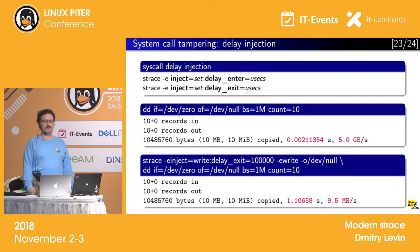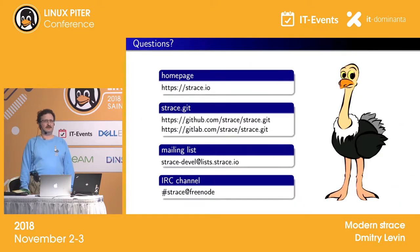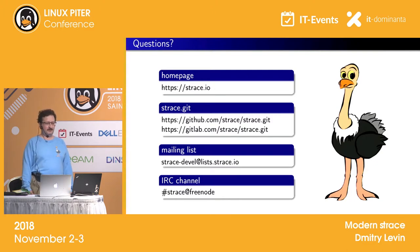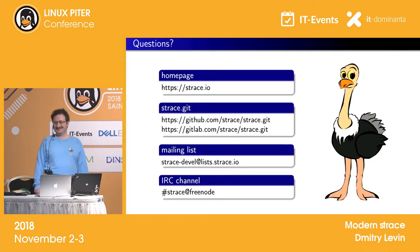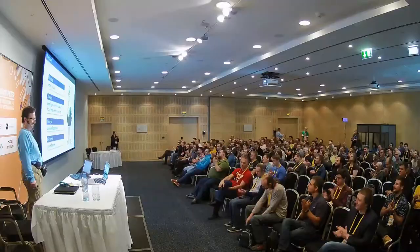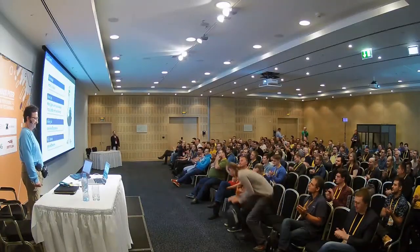That is what I wanted to talk to you about - new strace features. Although strace is 27 years old now, it is still being developed with new features added that could be useful in real life. Last year the program got a mascot character as a symbol.